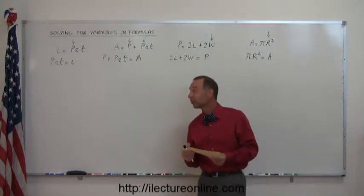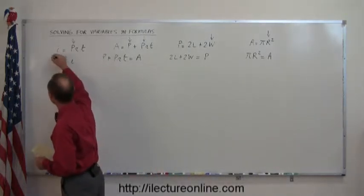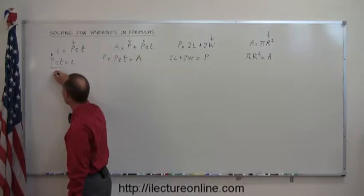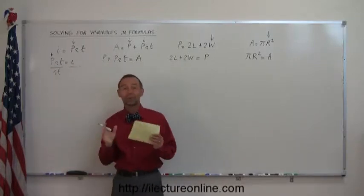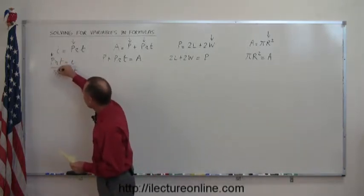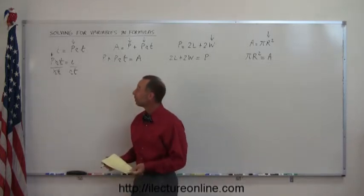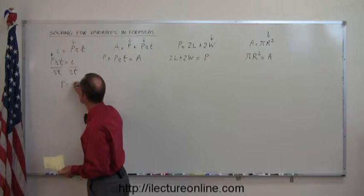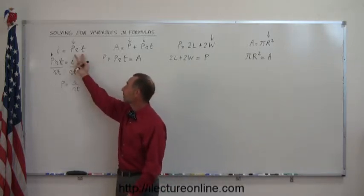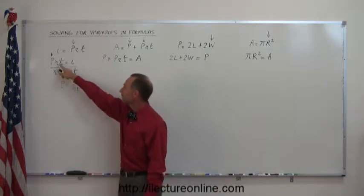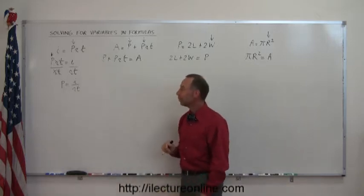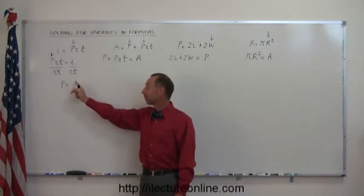Now, just like we do with single-variable equations, we look at the variable we're trying to solve for — the letter p — and we want to get rid of r and t. To do that, we divide the left side of the equation by r and t. Of course, whatever we do to the left side, we must also do to the right side — divide by r times t. Notice that r cancels r and t cancels t, and now we have isolated the variable p. So we end up with p equals i divided by r times t. The principal is the interest earned divided by the rate multiplied by the time.